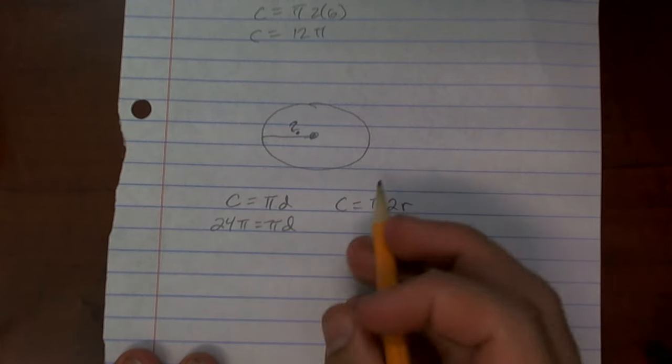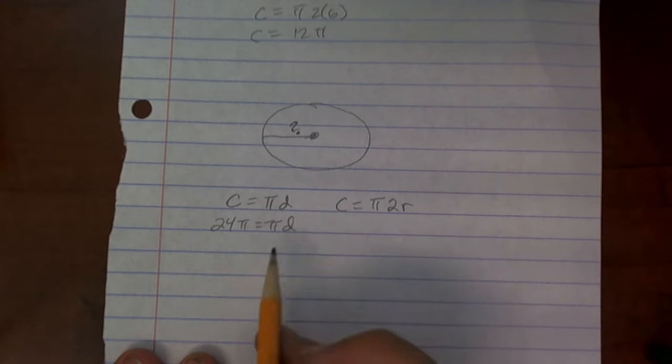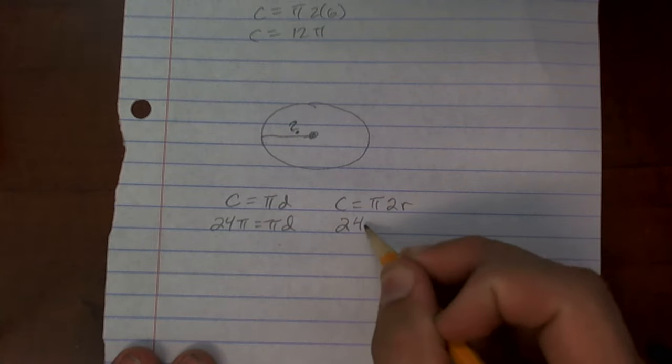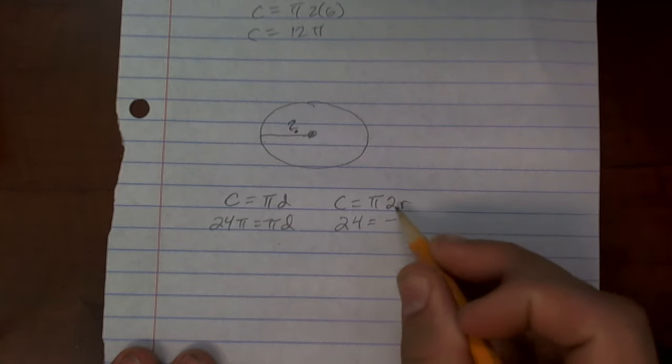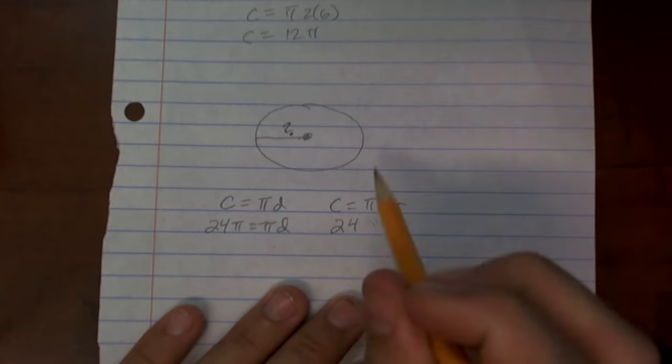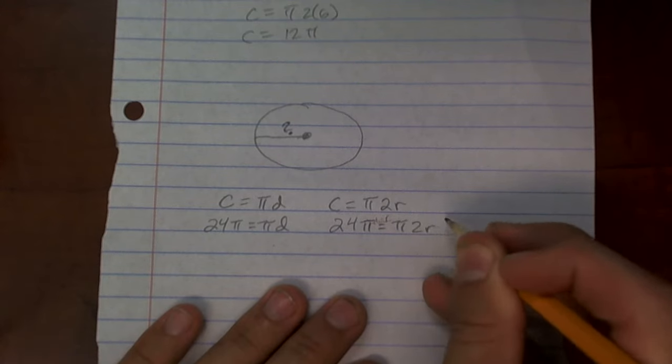equals pi times diameter. And it doesn't matter which one I could plug in for here. So now to solve for, or you could even plug it in for this one, 24. If I plug it in, 24 times pi equals pi times 2r.